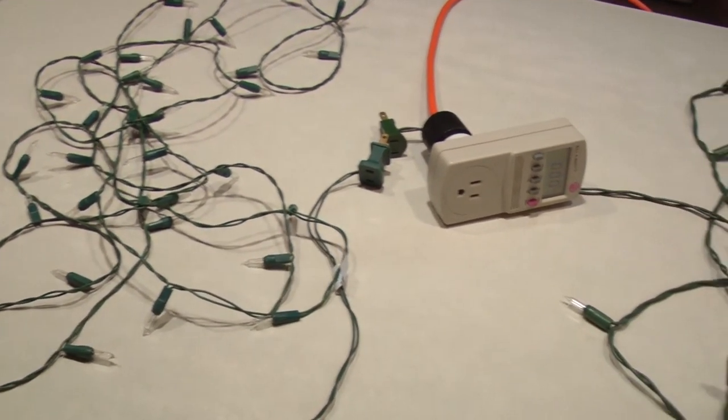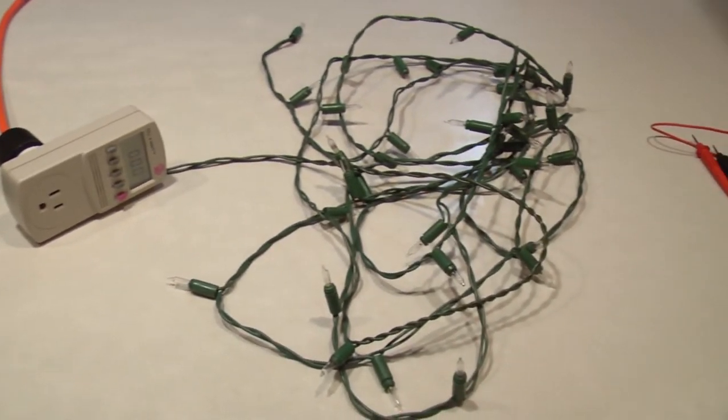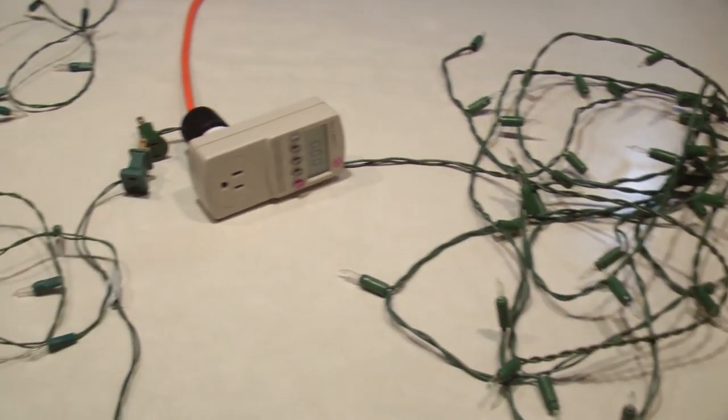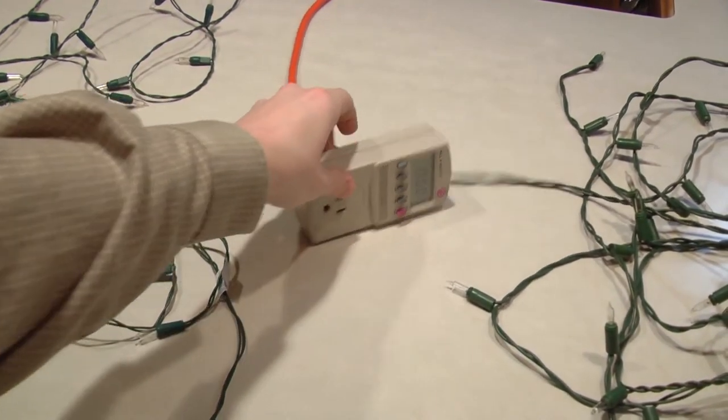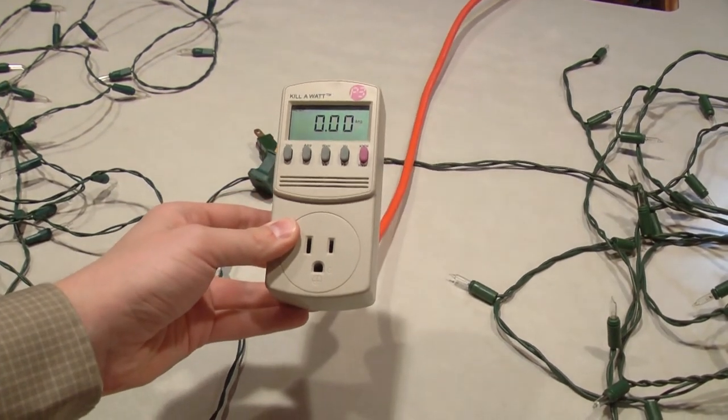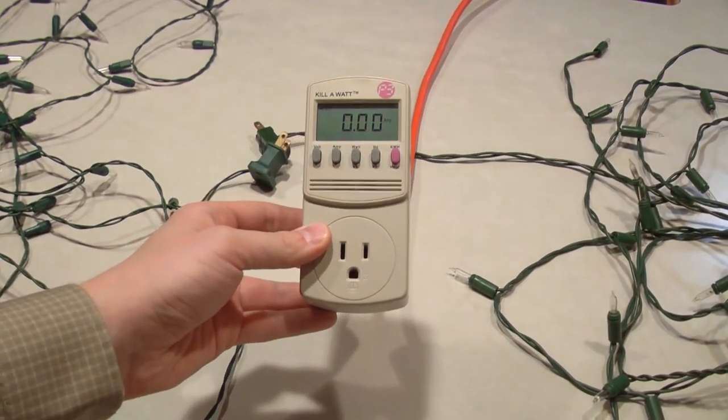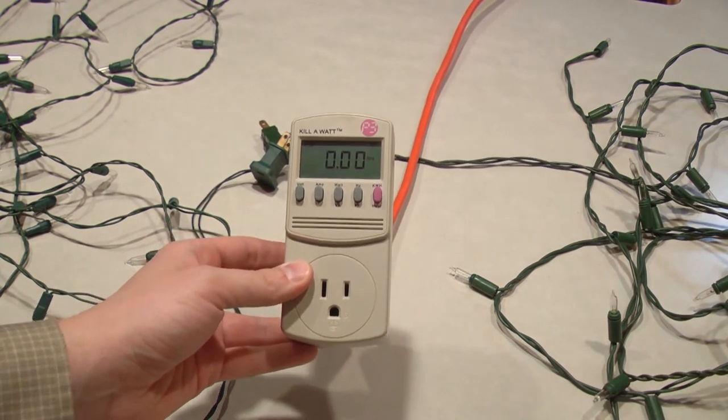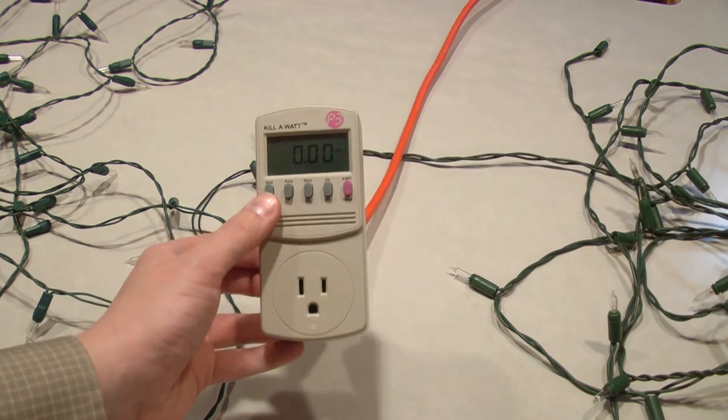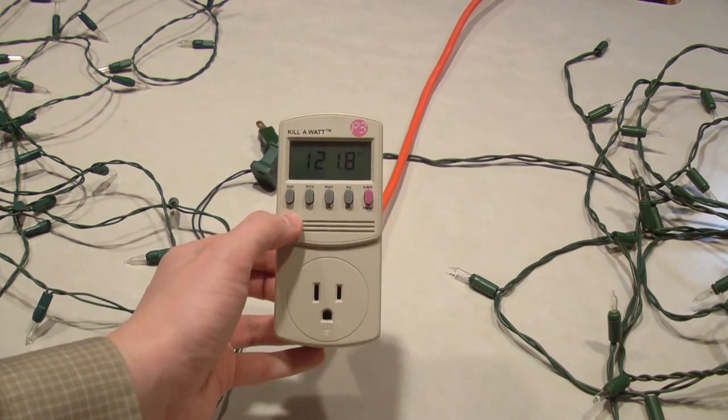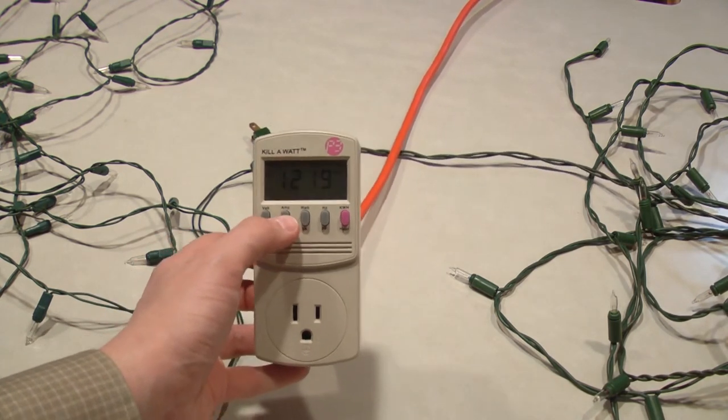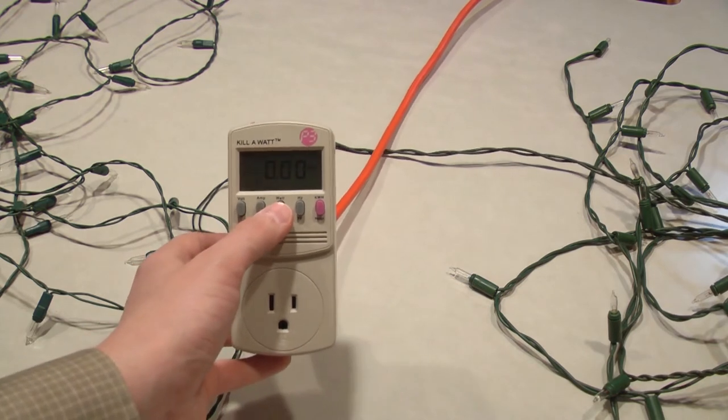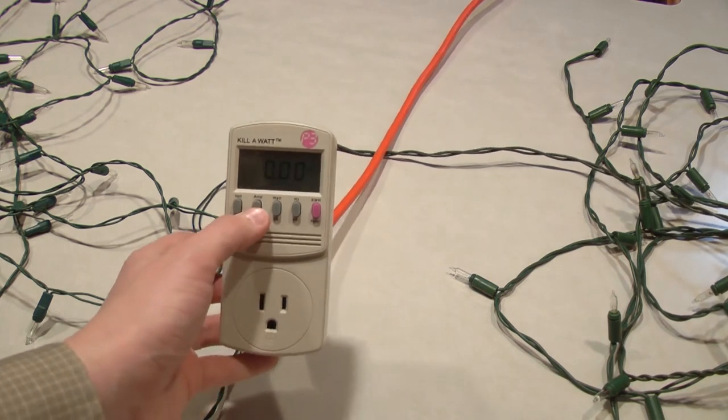So here I have two sets of miniature Christmas lights. Each set has 35 lamps. And I'm using this device here, called a kilowatt, to measure the current through each set. These are pretty handy devices for measuring how much power a device uses. You can measure voltage, which here is 121.8 volts at the moment. You can measure the amperage, which is current, or the wattage, which is voltage times amperage.